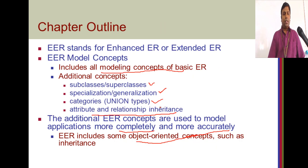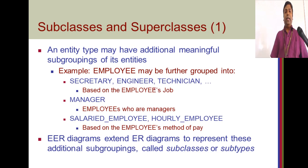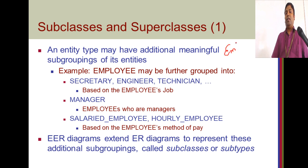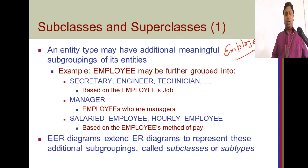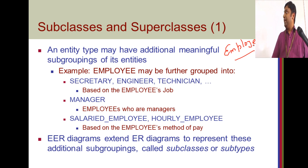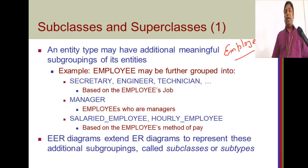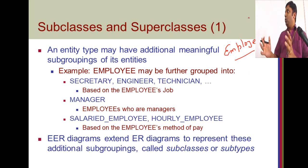We start with superclasses and subclasses. Take any entity in an organization — the employee entity is a very broad term. You can group employees into subcategories. For instance, secretary is an employee, engineer is an employee, technician is an employee. You have different categories of employees based on the kind of job they perform or certain conditions inside the organization.